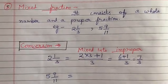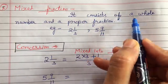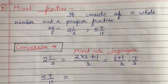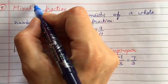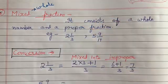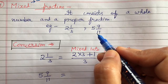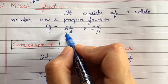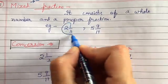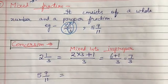Next is mixed fraction — a fraction that consists of a whole number and a proper fraction. Mixed means 2 or 3 things are mixed together. Here we have a whole number, which is a counting number, and a proper fraction, in which the numerator is smaller. For example: 2 and 1 by 3, or 5 and 9 by 11. These fractions which have a whole number and a proper fraction are called mixed fractions.